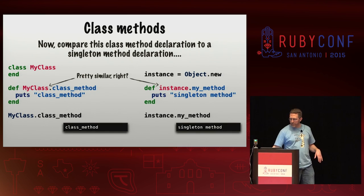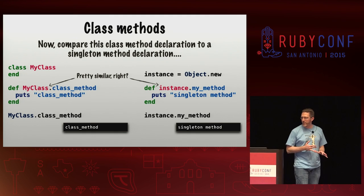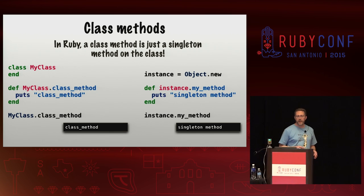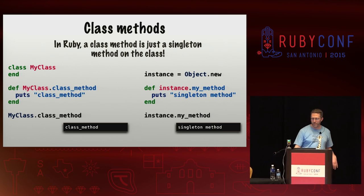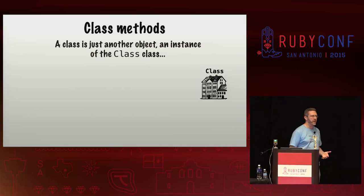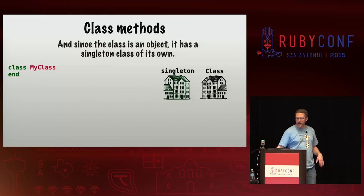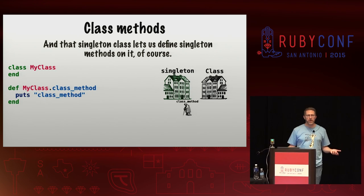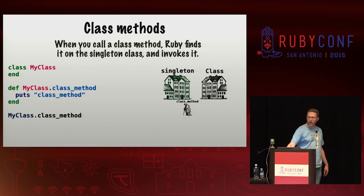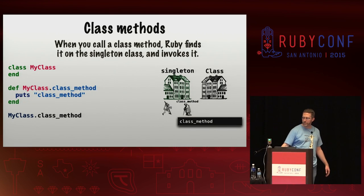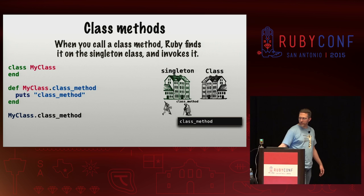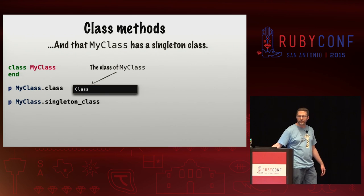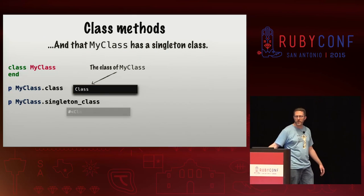Let's compare that class method declaration, where we use the class constant, to a singleton method declaration — they look pretty similar. The truth is, in Ruby, a class method is just a singleton method on the class. A class is just another object, an instance of the class Class. Since the class is an object, it has a singleton class of its own. That singleton class lets us define singleton methods on it. You can confirm that my class is an instance of Class by calling class on it, and you can also call singleton_class on the class object to examine that singleton class.